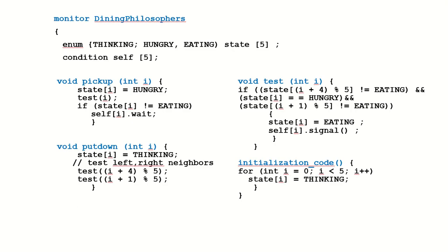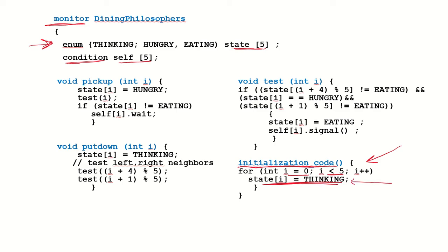Monitors will help in this - you can watch the earlier video on monitors to see the construct of monitors. Here are the declarations: the state of the philosopher which can be thinking, hungry, or eating, and the condition variables self of size 5. In the initialization code, for i from 0 to less than 5, the state of each philosopher is set to thinking. That means each philosopher begins in the thinking state.